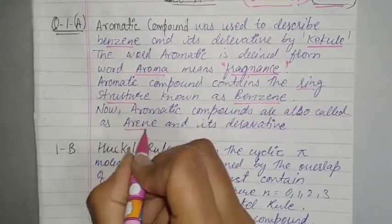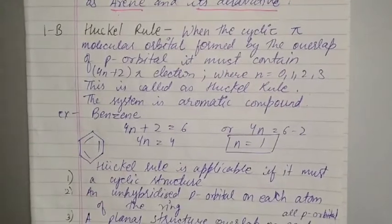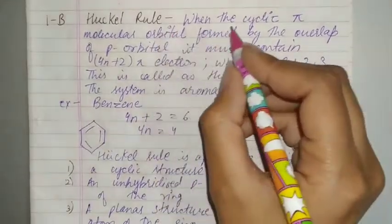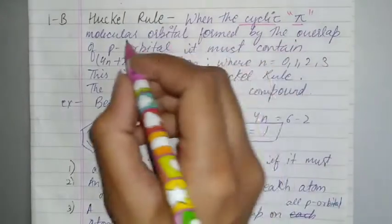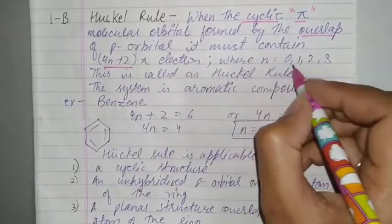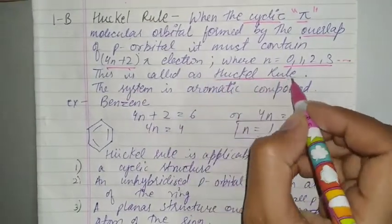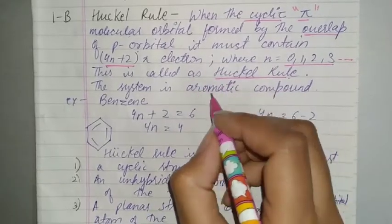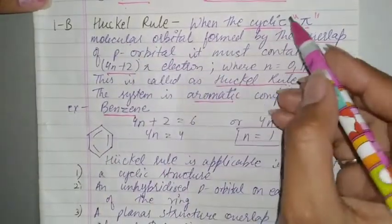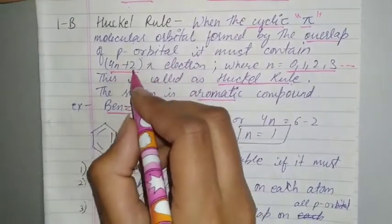Next question is what is Huckel's rule and give example in respect of benzene. Huckel's rule: when the cyclic pi molecular orbital formed by the overlap of p orbital must contain 4n plus 2 pi electrons where n is 0, 1, 2, 3 integers and so on. This is called as Huckel's rule. The system is aromatic compound. It is cyclic pi molecular orbital formed by overlapping of p orbitals.